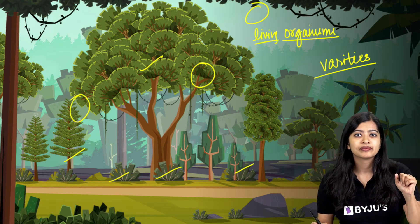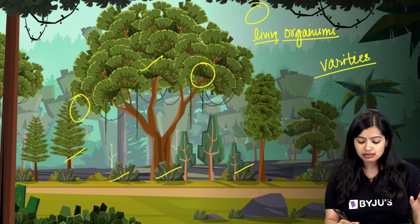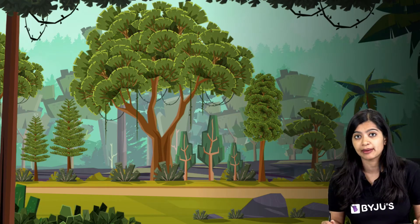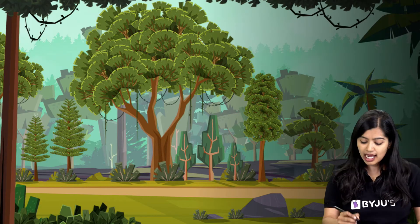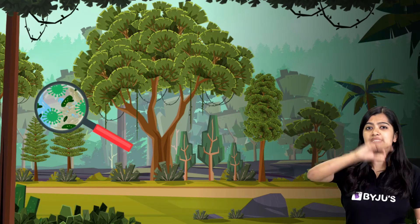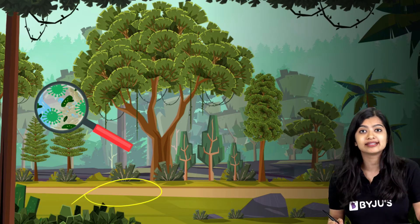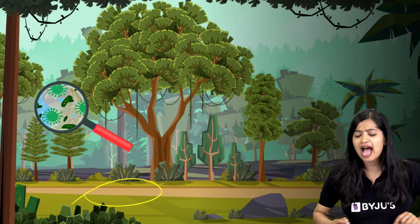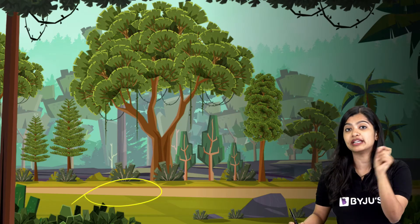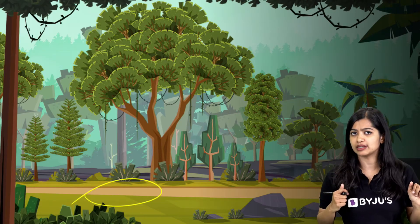But the thing is, there are some more organisms here. It's just that when we have a look at it at one go, we will not be able to see them. But if we zoom closely and magnify it, whether it's in the air or even in the soil, we will find some organisms. And these organisms are so tiny that they are not visible to the naked eye, and we call them microorganisms.